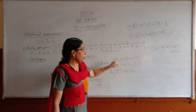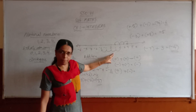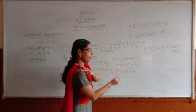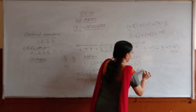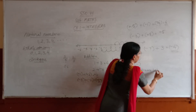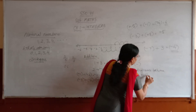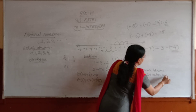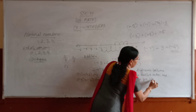So this is how you add integers. If both have the same sign, you add and use the common sign. If one is positive and one is negative, take the difference between the two — the difference between the absolute values — and give the sign of the bigger number.